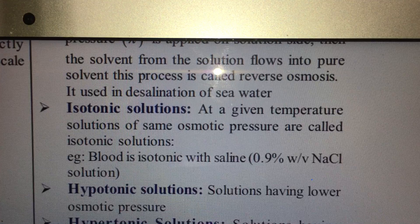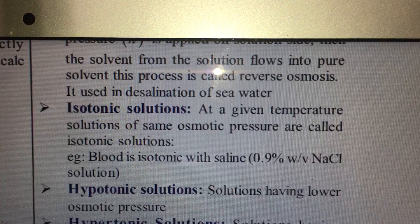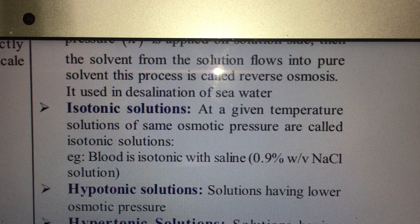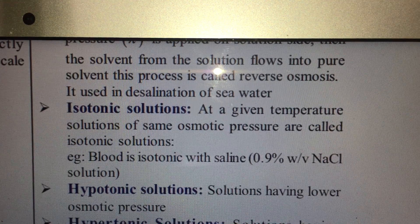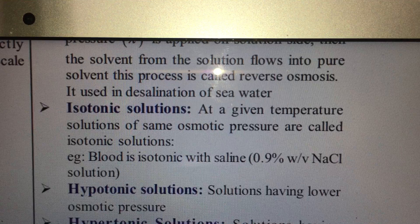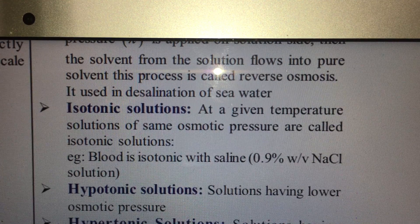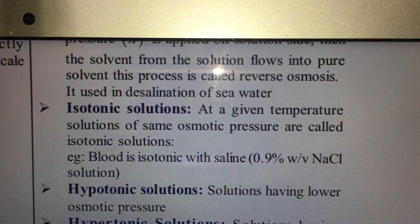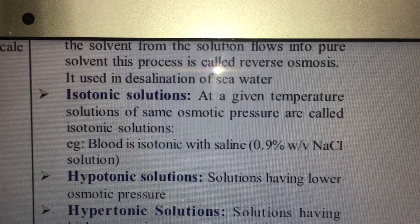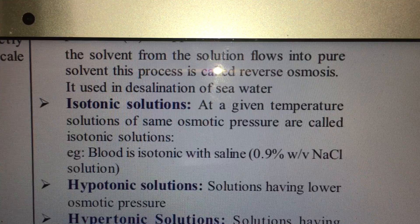When somebody suffers from an injury and loses a lot of blood, the blood pressure in the body drops. There may be a danger that the blood supply to the brain may stop, which may lead to coma or death. To prevent that and to build blood pressure back to normalcy, doctors often give saline. The saline is 0.9% weight by volume NaCl solution. It is isotonic to blood.